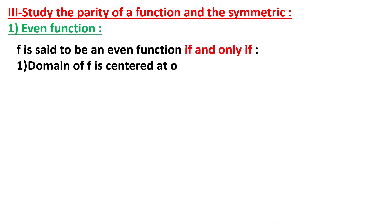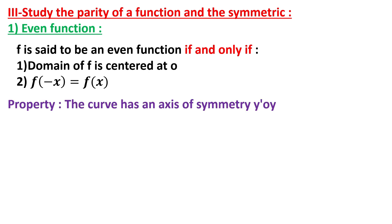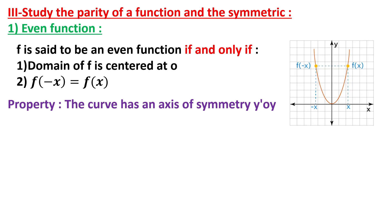Even function: a function f is said to be even if and only if the domain of f is centered at zero. This means that for every x in the domain, minus x is also in the domain, and the function satisfies f(−x) = f(x) for all x in the domain. This property implies that the graph of f has an axis of symmetry along the y-axis, denoted as y'y.